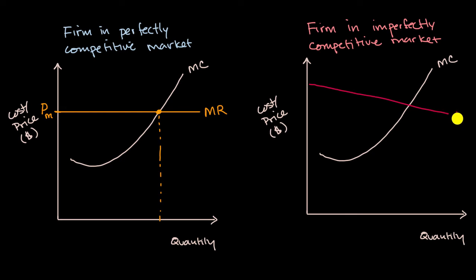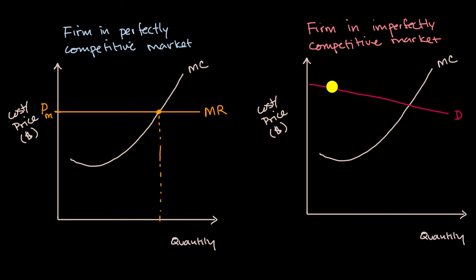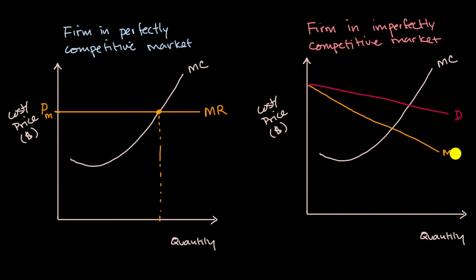That is their demand curve. We also saw that the demand curve — essentially the price they could get at any quantity — is not going to be the same as a marginal revenue curve. If the demand curve is downward sloping, the marginal revenue curve is likely to be even more downward sloping, looking something like this.